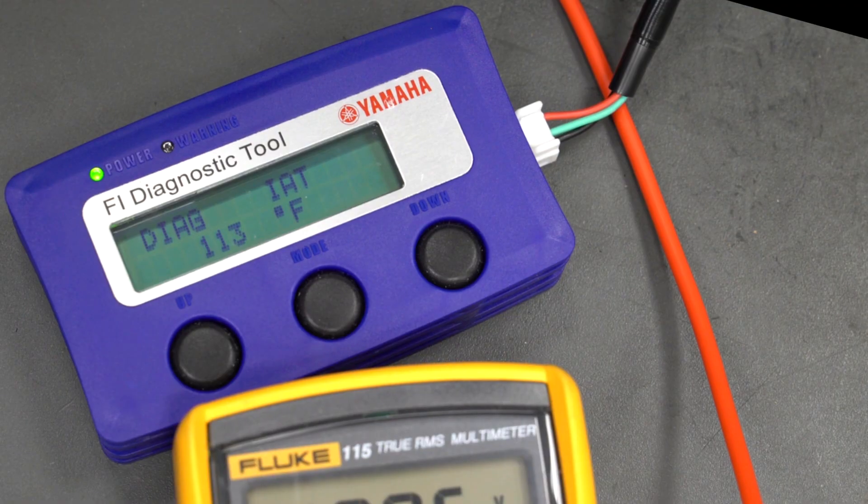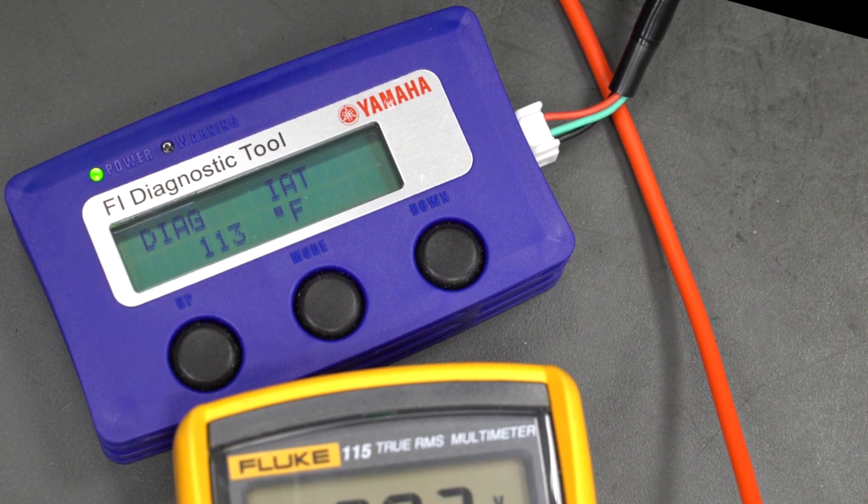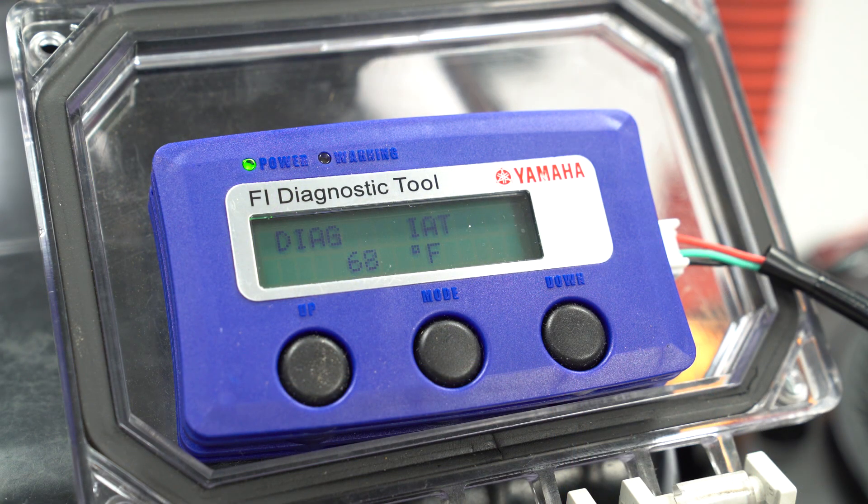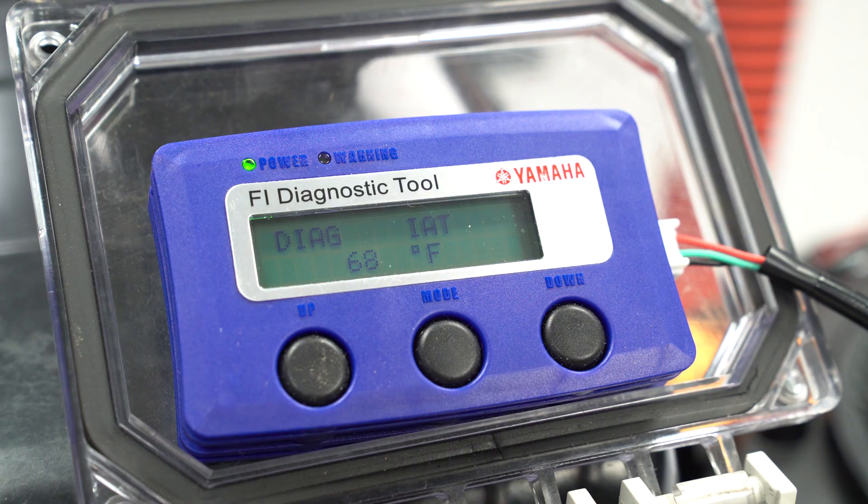The IAT settings on the FI Diag tool will display the temperature reading in the intake track, and this could be a pretty high reading if the engine is running or just shut off. If the engine hasn't been running for a few hours, the temperature should be the same or very close to room temperature.